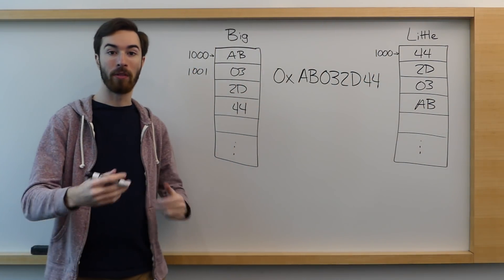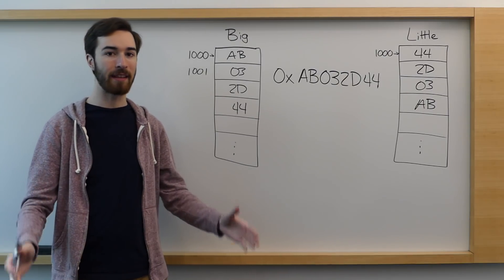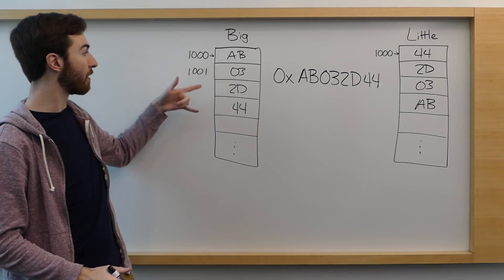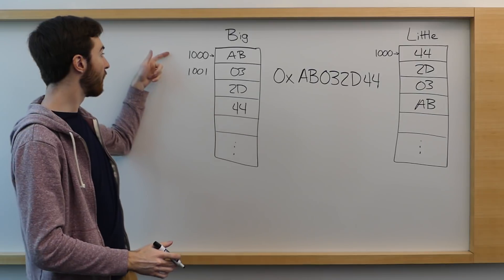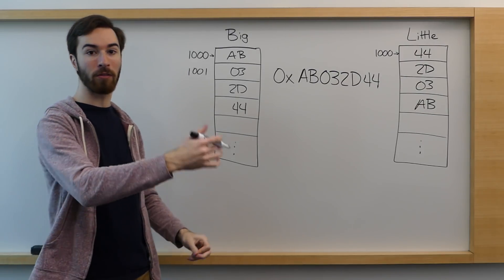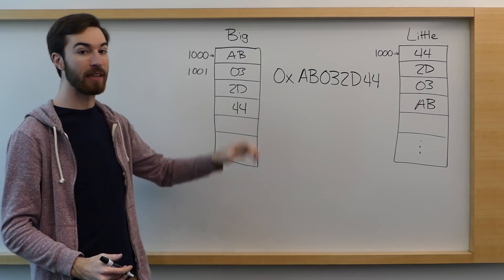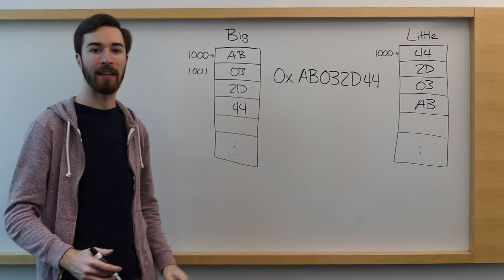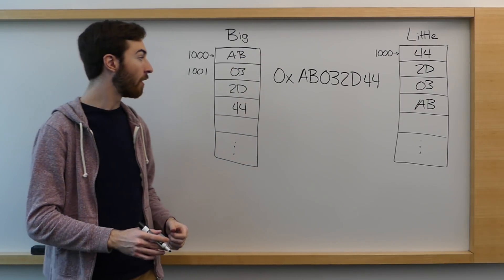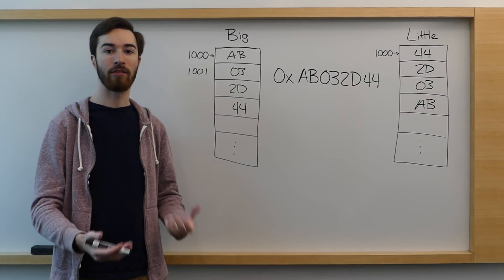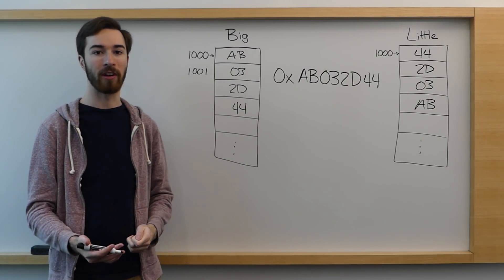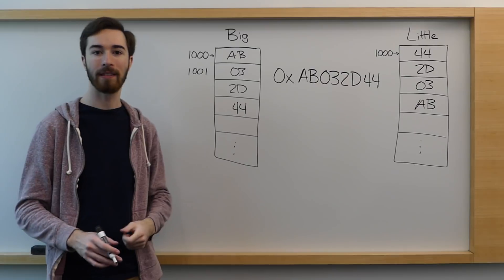This becomes very important when we're loading and storing differently sized things in ARM. If you're storing something that's larger than a single byte to a memory address, or if you're loading something that's larger than a single byte from a memory address, you need to worry about whether your system is big endian or little endian. Now we're going to talk about the different instructions that actually handle loading and storing in ARM.